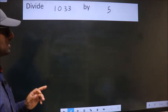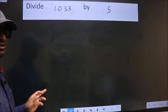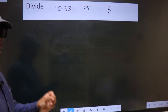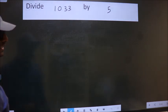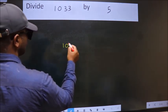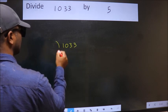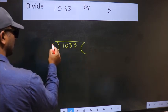Divide 1033 by 5. To do this division, we should frame it in this way. 1033 here, 5 here.